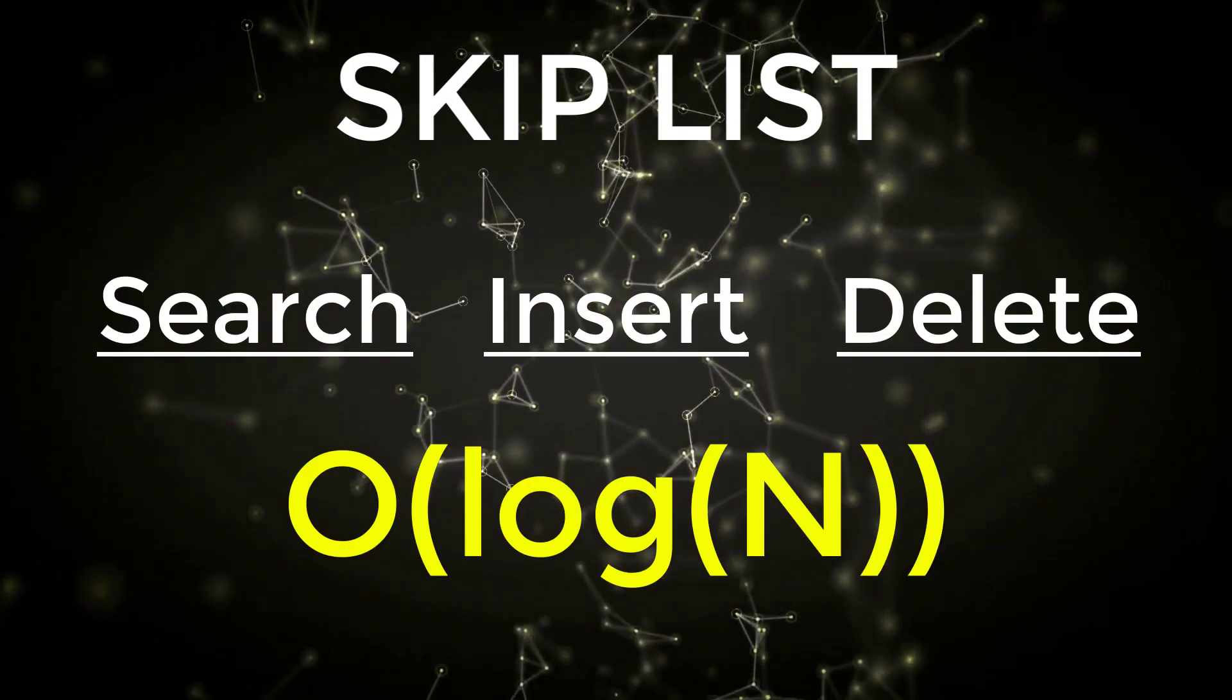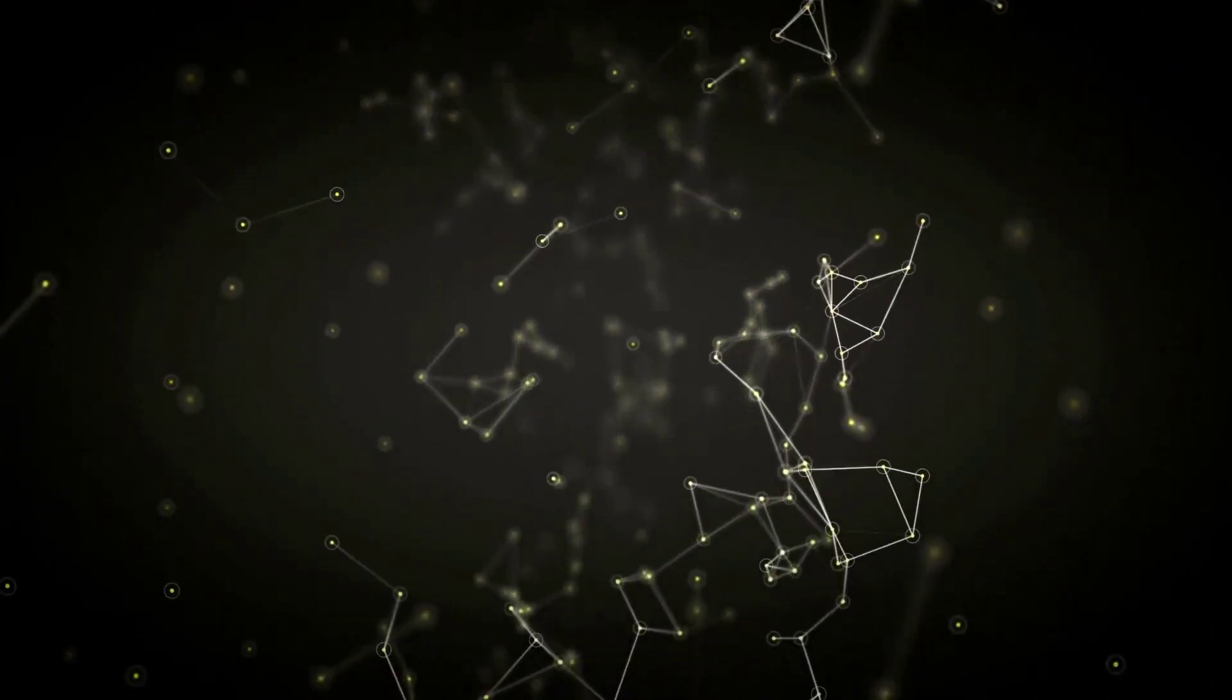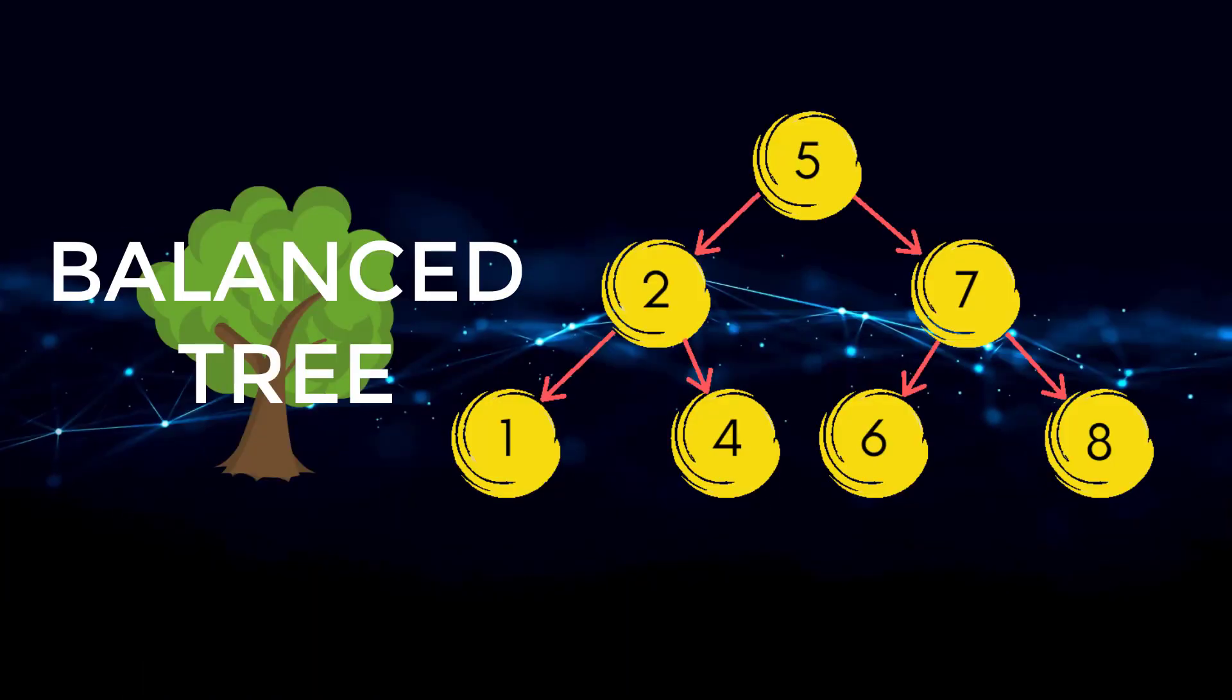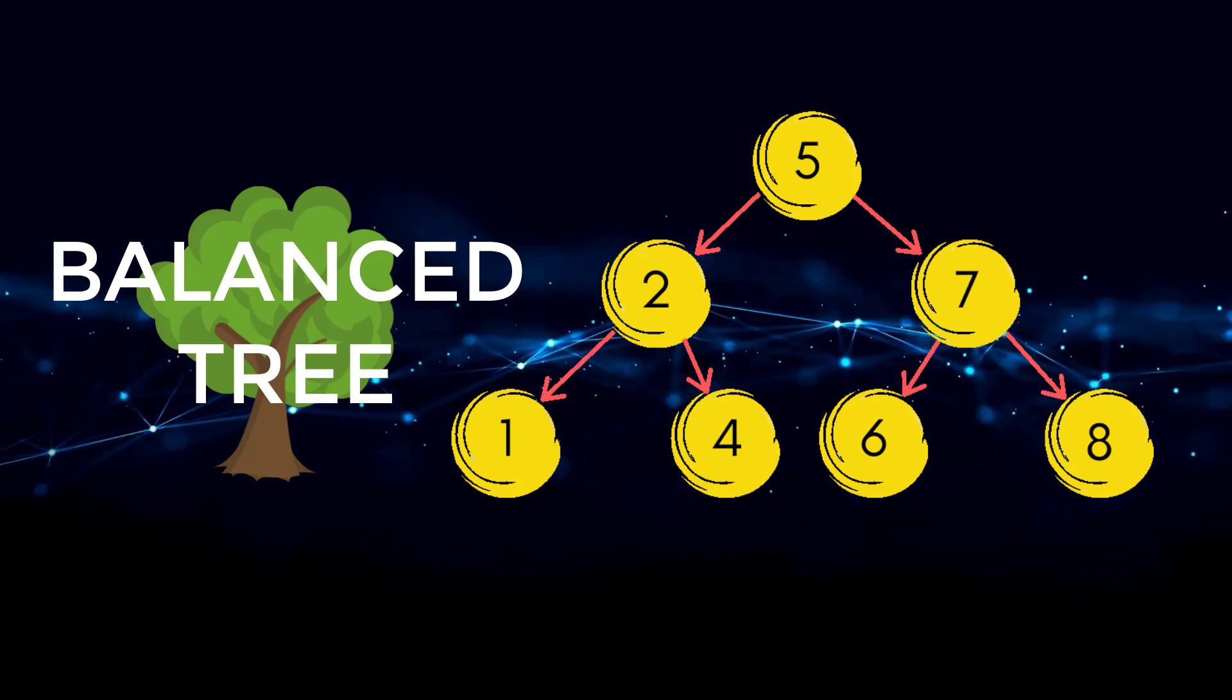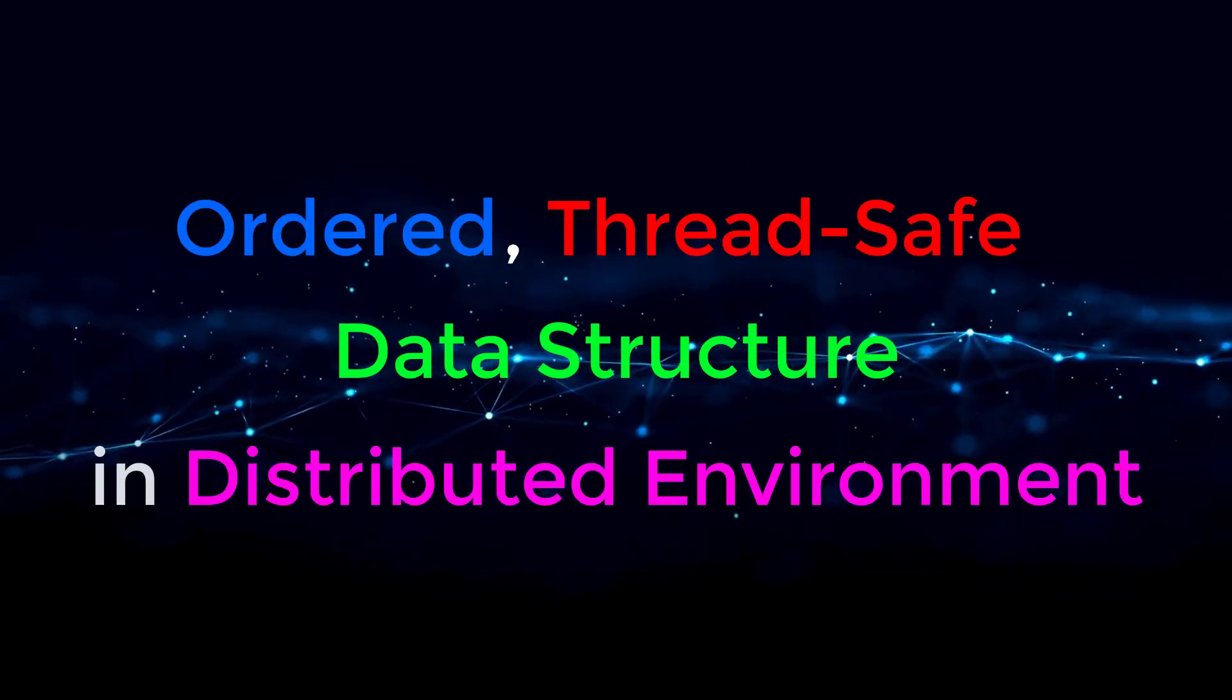For a skip list, our search, insert, and delete will all be log of N. So I'm sure you might be wondering, well, when will we use this? This is actually very similar to how balanced trees work. The answer to that question is if we need an ordered thread safe data structure in a distributed environment.